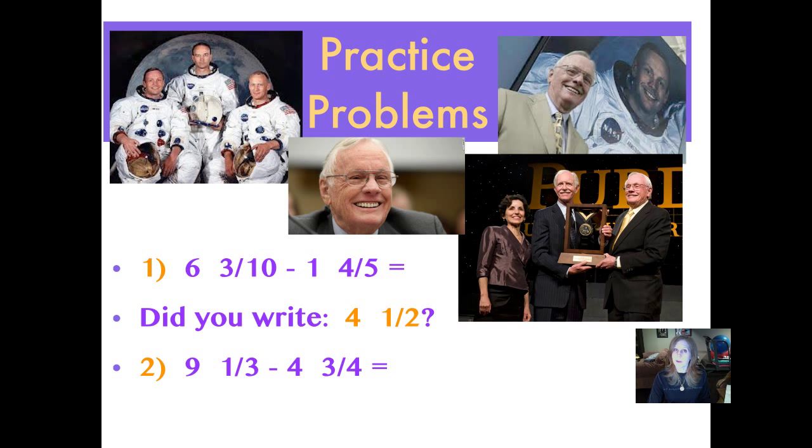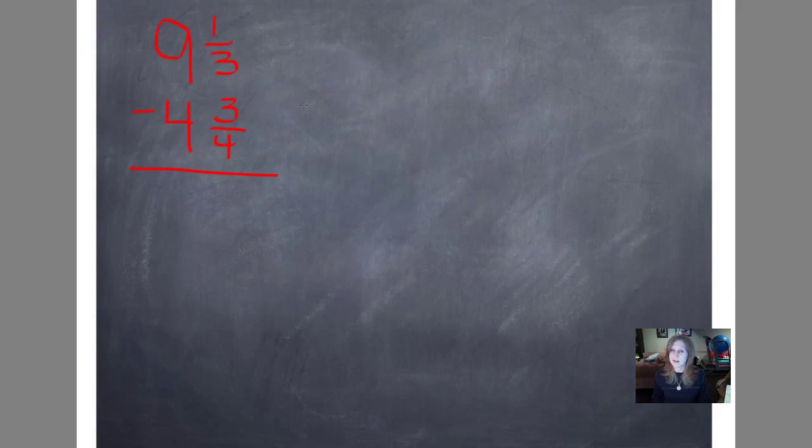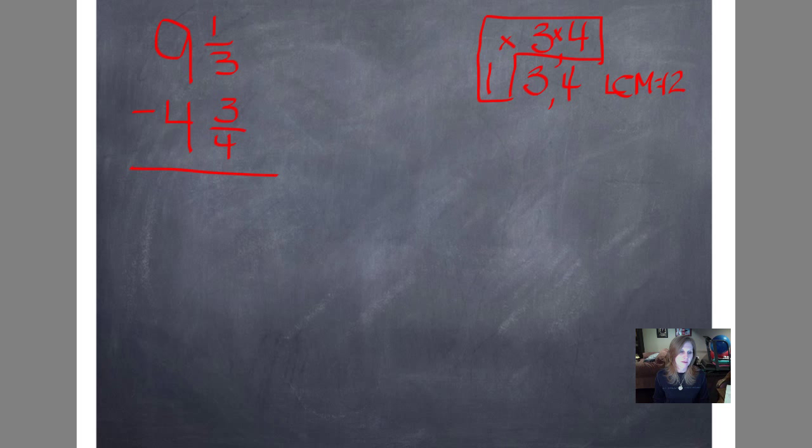Number two, 9 1/3 - 4 3/4. Pause it and push play when you're ready. Did you write 4 7/12? Let's work that one together. So I have different denominators, so I'm going to want to make a cake. And I put 3 and 4 in the bottom layer of my cake. The only number that will divide evenly into them, because they are only 1 different from each other, is the number 1. 1 goes into 3 three times. 1 goes into 4 four times. So I'm ready to make my L after only one layer. 1 times 3 is 3, and 3 times 4 is 12. My LCM is 12.